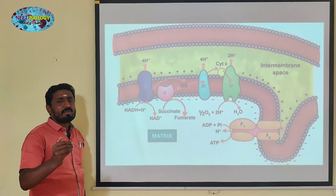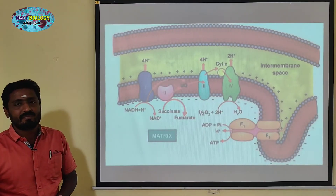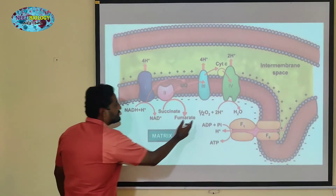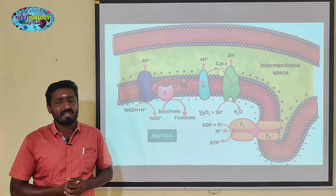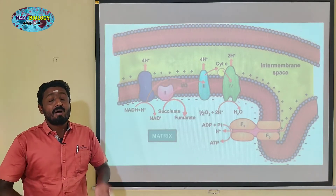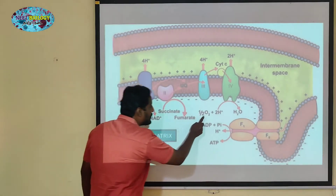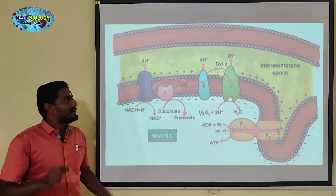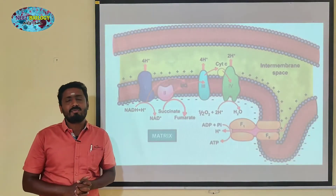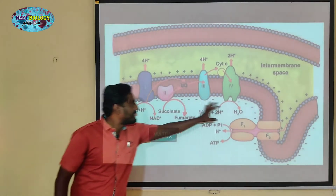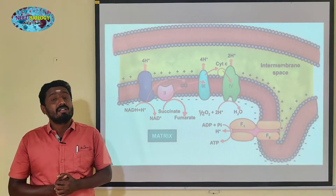H2O is produced with the help of oxygen. Where does the oxygen go? The oxygen passes through the inner membrane of every cell and every mitochondria, into the electron transport chain.